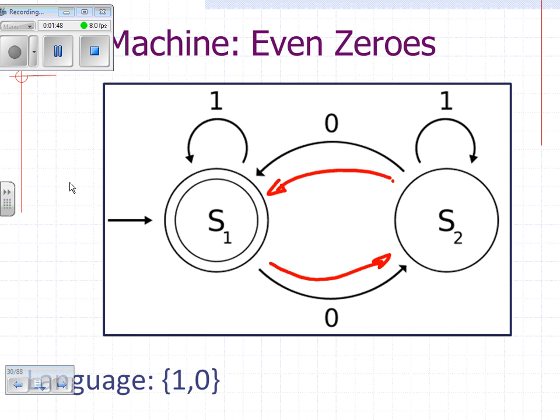What this means is that this machine will detect if the input has even numbers of 0s. Because if you have even numbers of 0s, when all the input has been read in, then you're in the accepting state. You can work through this yourself.